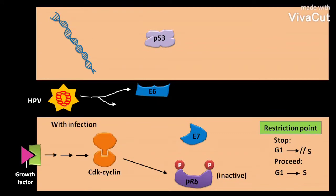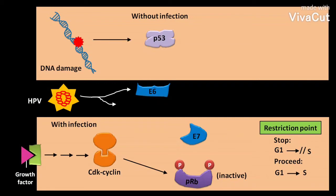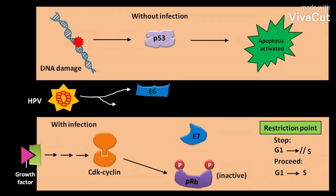In other cases, without the infection of HPV, if some radiations or chemicals cause DNA damage, then the DNA damage activates another tumor suppressor protein in the cell called P53. This P53 activates apoptosis. As a result, the cell with damaged DNA undergoes programmed cell death.